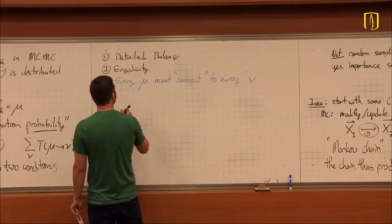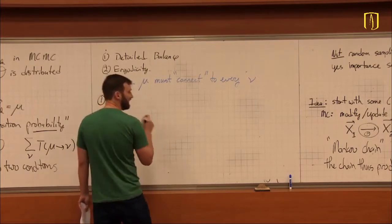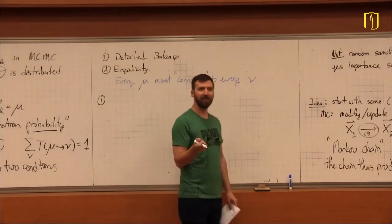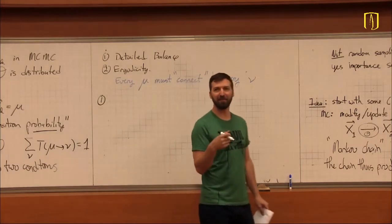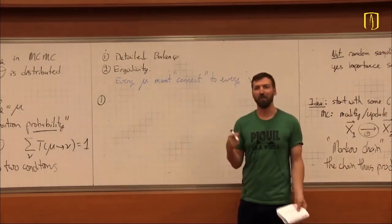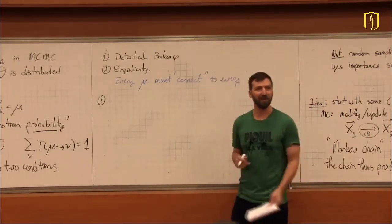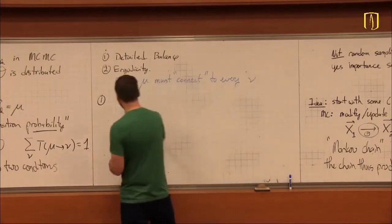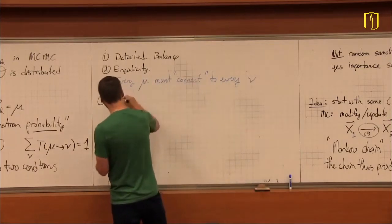Detailed balance is the idea that the rates into and out of different configurations are somehow balanced — they're equal.